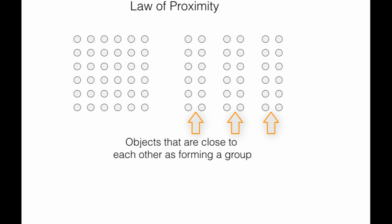In summary, the law of proximity states that when an individual perceives an object, they perceive objects that are closer to each other as forming a group.